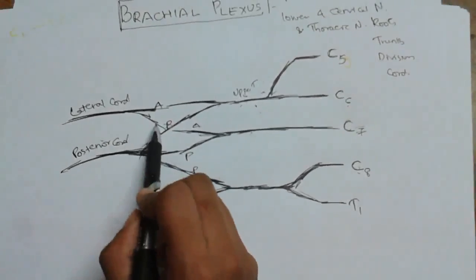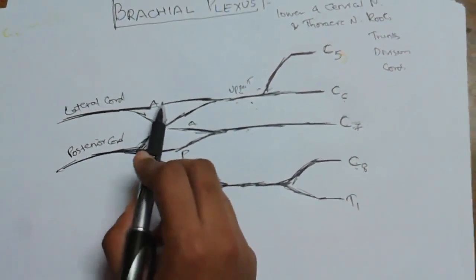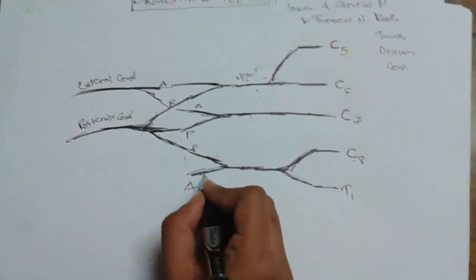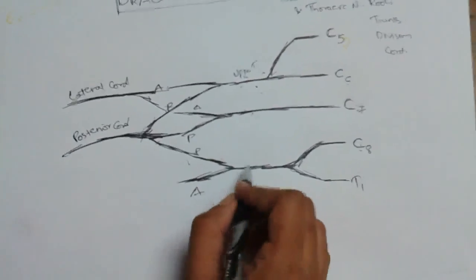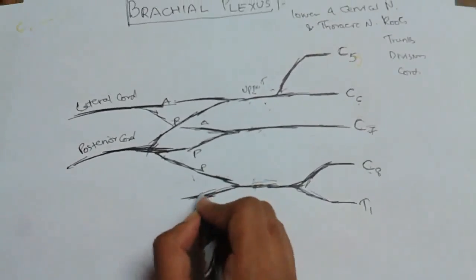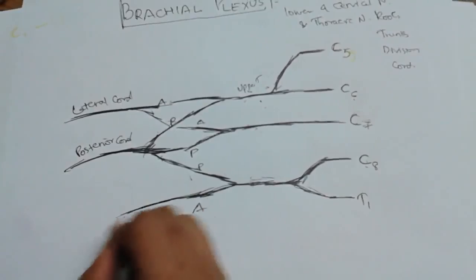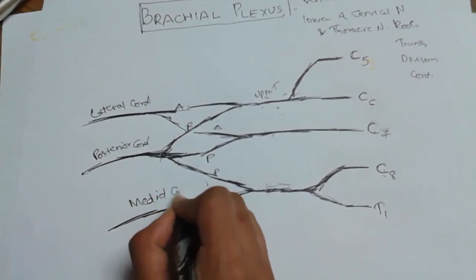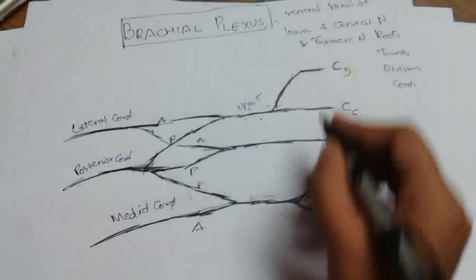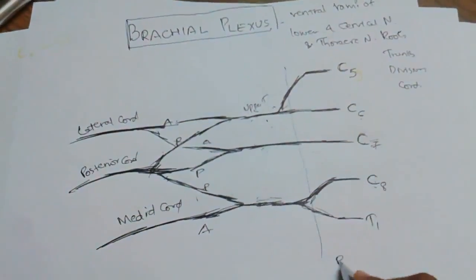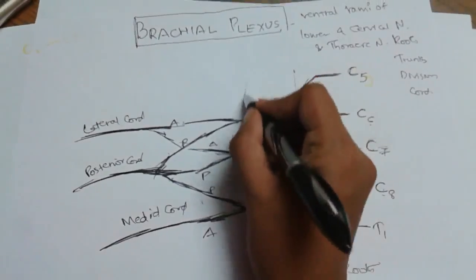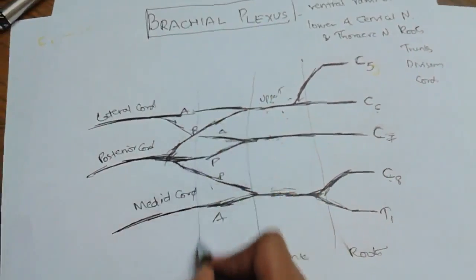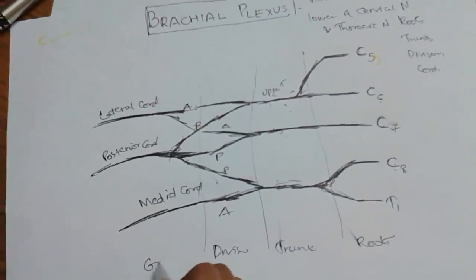The anterior divisions of the upper and middle trunk combine to form the lateral cord. The anterior division of the lower trunk continues to form the medial cord. So these are roots, these are trunks, this is division, and these are cords.